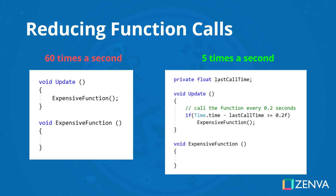All we're doing is creating a private variable called lastCallTime, and checking to see that if our current time minus the last time we called this function is greater than or equal to 0.2 seconds — or whatever frequency you want — then we call the expensive function. In the expensive function, you then set lastCallTime to equal Time.time so that it is reset, and it keeps going to call that expensive function every 0.2 seconds. For something like pathfinding, it's not really noticeable going from every frame to 5 times a second.